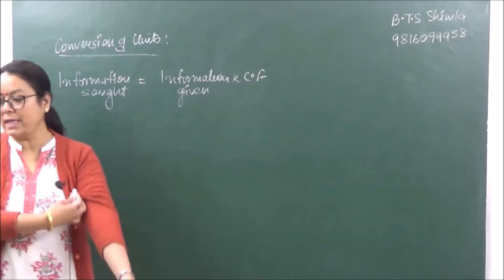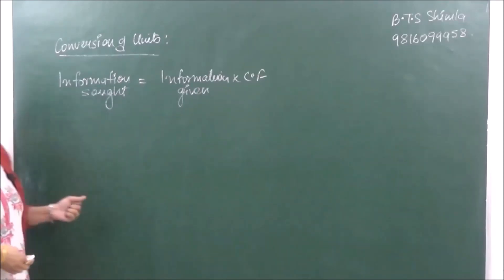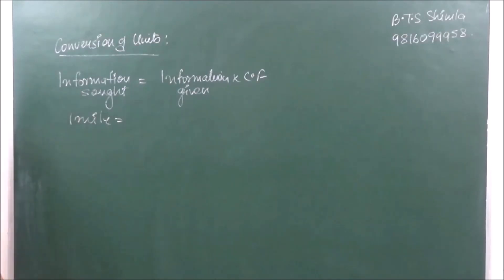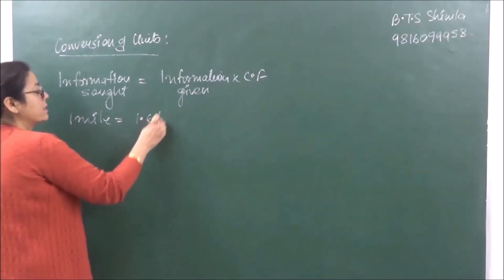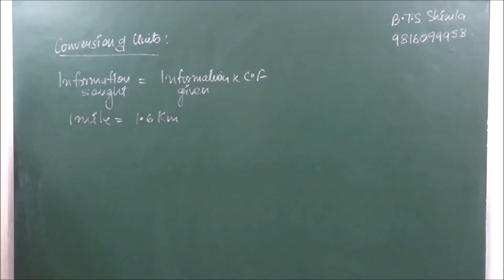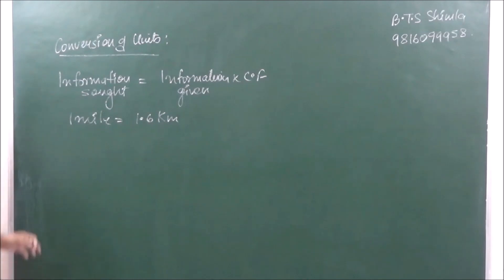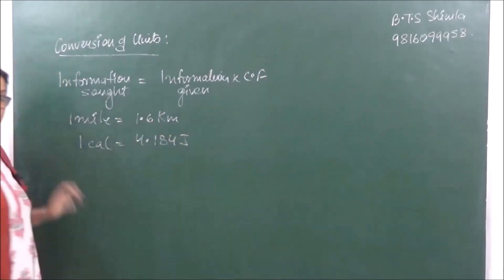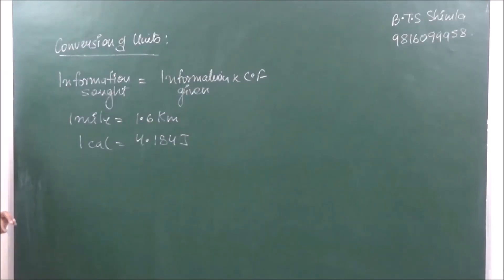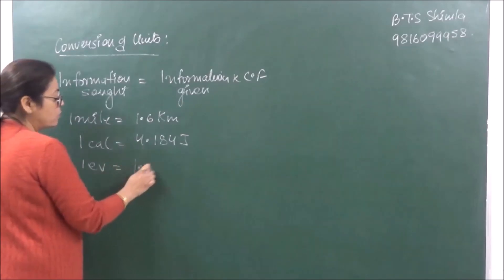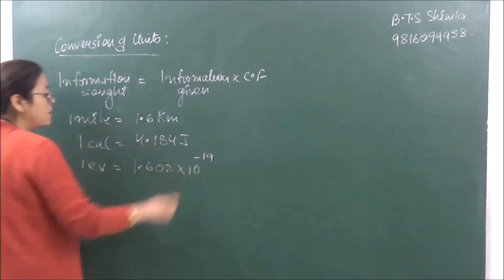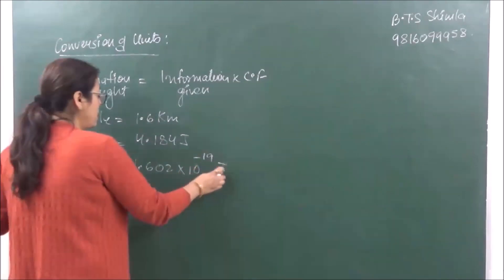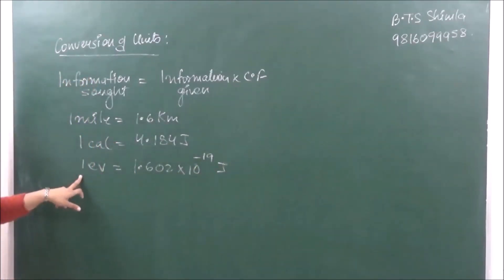Before that, let's note down some values you should know. For example, one mile is equal to 1.6 kilometers. Similarly, you should know that one calorie is equal to 4.184 joules. Then we have one electron volt, which is equal to 1.602 × 10⁻¹⁹ joules. These are conversion factors that are commonly used.